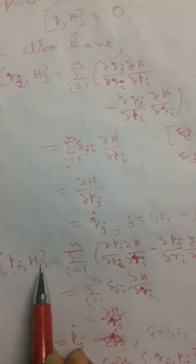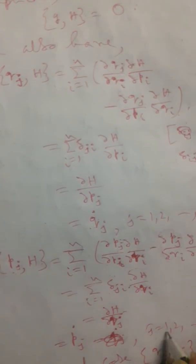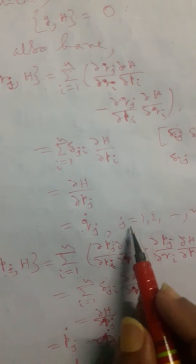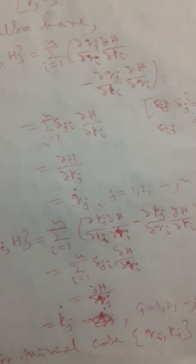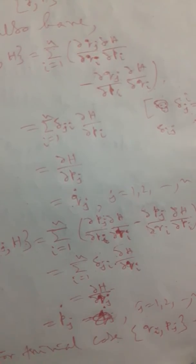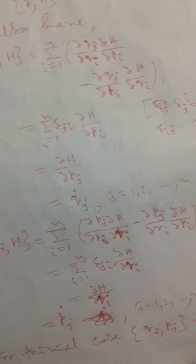So we have found using the Poisson bracket in terms of Hamiltonian functions: {pj, H} equals pj-dot for j from 1 to n. One should also note that for the trivial case, {qi, pj} equals δij. We have explored several properties of the Poisson bracket and evaluated various conditions using the Hamiltonian formalism. Today we end our class — thank you.